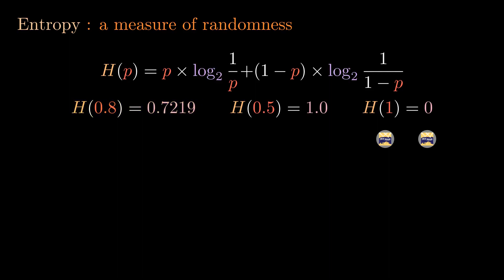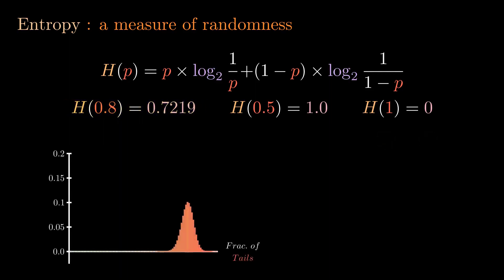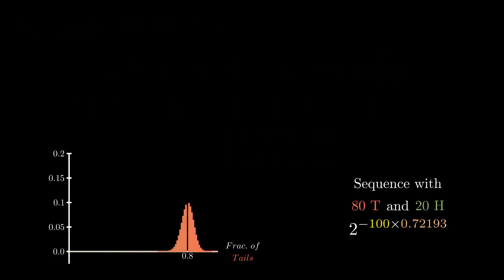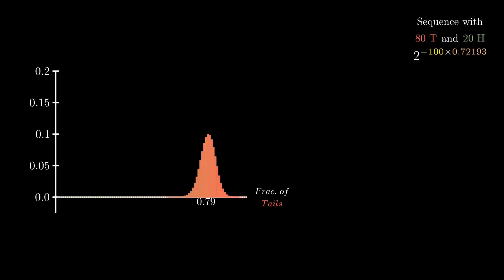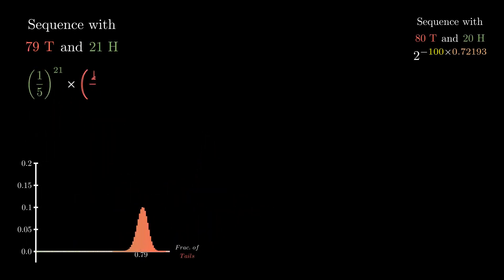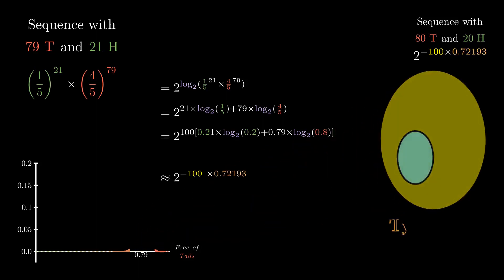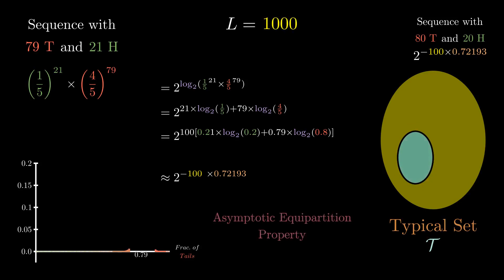Entropy naturally shows up as the key term in determining the probability of a specific pattern. For a sequence with 80 tails and 20 heads (fraction of tails 0.8), the probability was 2 to the power of minus L times the entropy. Sequences very similar to this, such as those with 79 tails and 21 heads, yield an expression very close to the entropy. In fact, all sequences in the typical set occur with more or less equal probabilities. Asymptotically, as the number of tosses goes to infinity, probabilities of sequences in the typical set become equal — this is the Asymptotic Equipartition Property, or AEP.